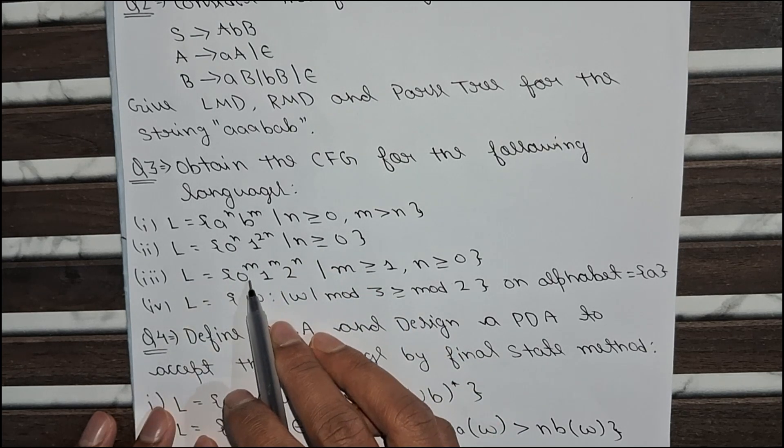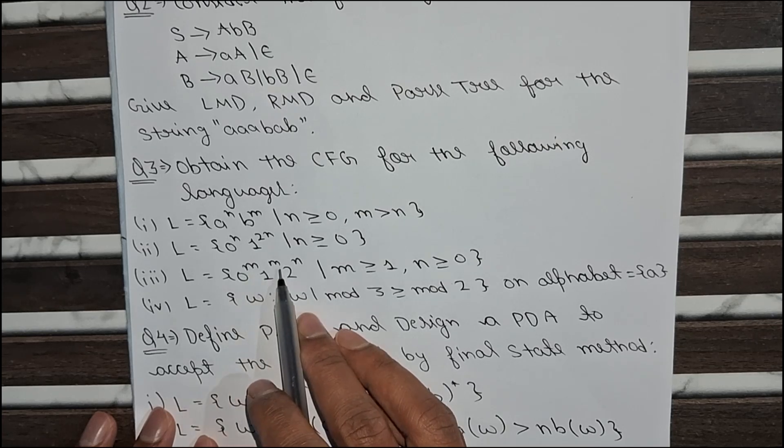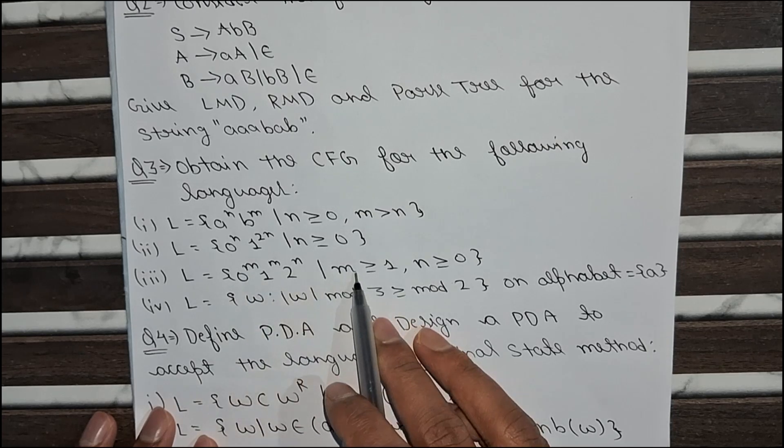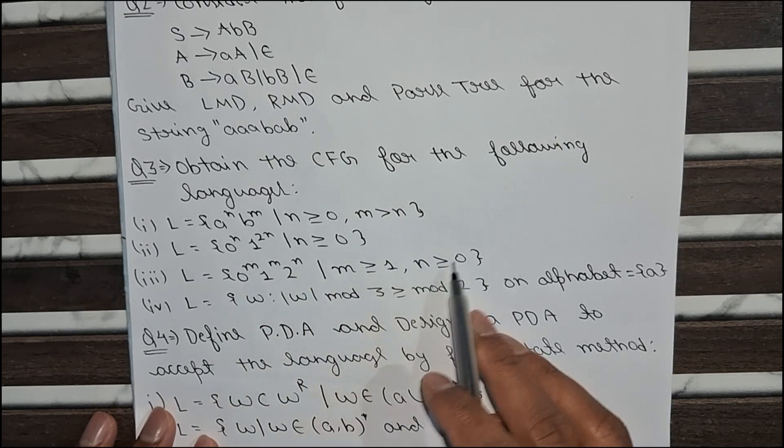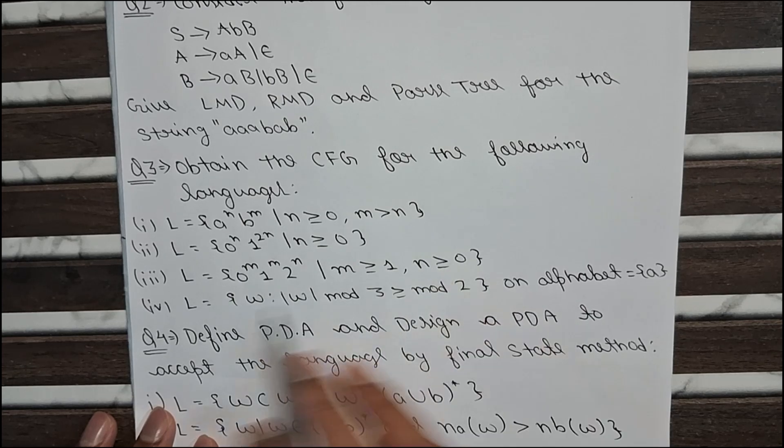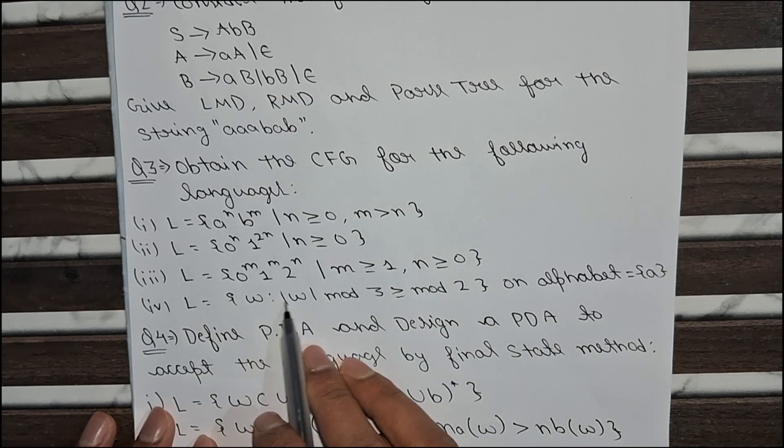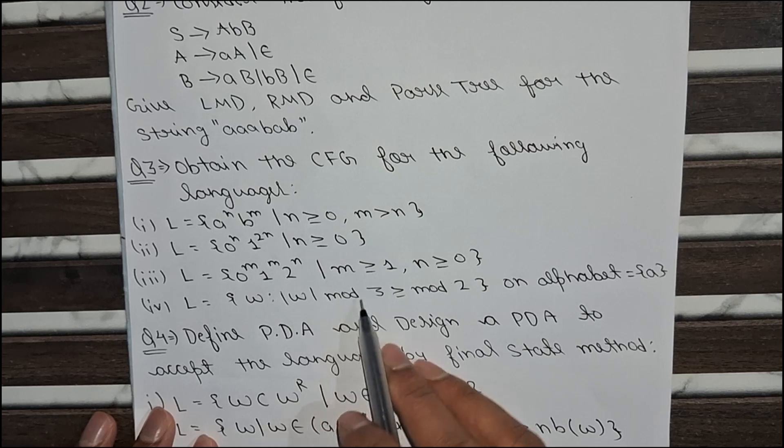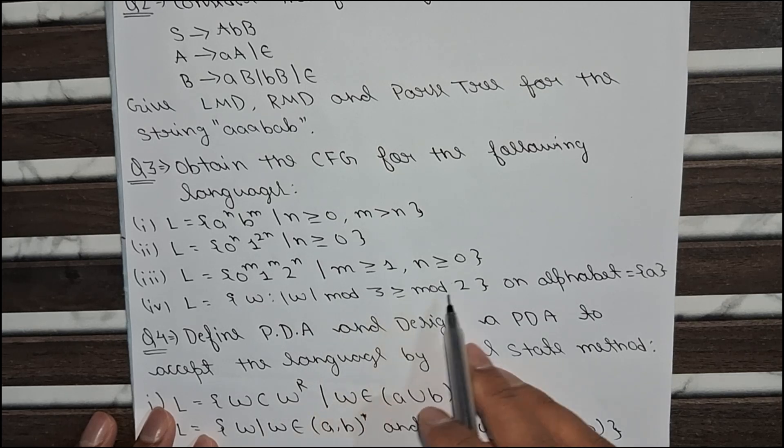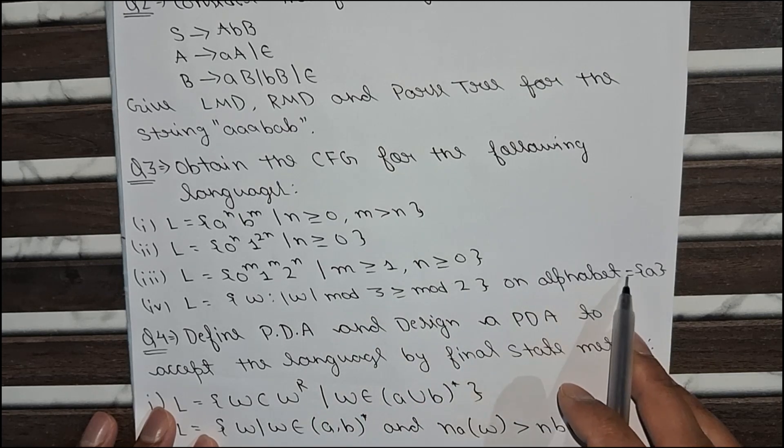Third language is given here as 0 to the power m, 1 to the power m, 2 to the power n where m is greater than or equal to 1 and n is greater than or equal to 0. And the fourth language is given as W such that the length of W mod 3 is greater than or equal to mod 2 on alphabet A.